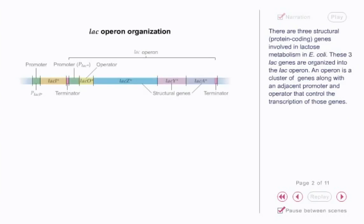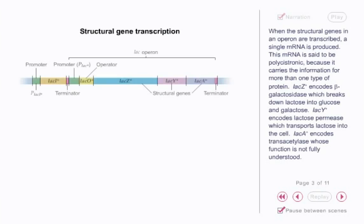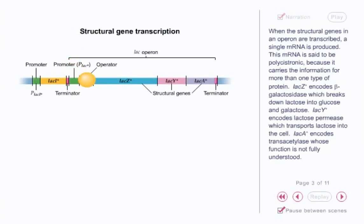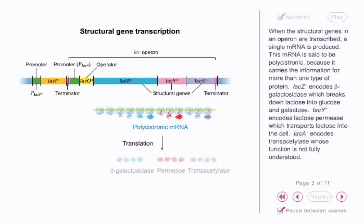There are three structural protein coding genes involved in lactose metabolism in E. coli. These three lac genes are organized into the lac operon. An operon is a cluster of genes along with an adjacent promoter and operator that control the transcription of those genes. When the structural genes in an operon are transcribed, a single mRNA is produced. This mRNA is said to be polycistronic because it carries the information for more than one type of protein.